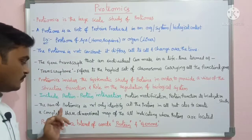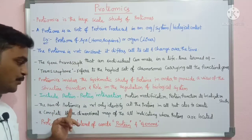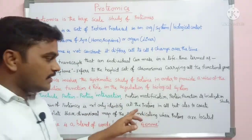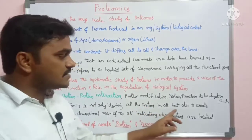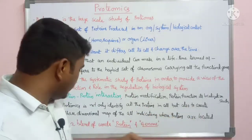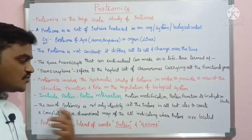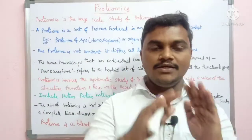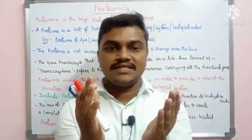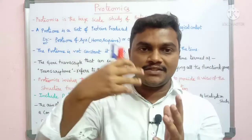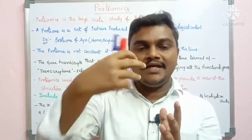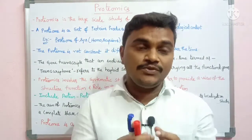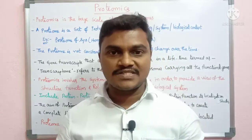The aim of proteomics is not only to identify all the proteins in the cell, but also to create a complete three-dimensional map of the cell, indicating where proteins are located. In which area of the cell a particular type of protein can be found — that is what we study in proteomics.